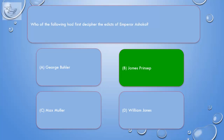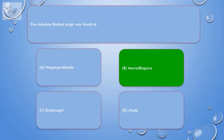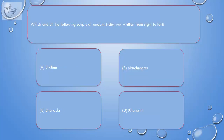Question: Priya Shokan Brahmi script was found at: A. Nagarjunakonda, B. Anuradhapura, C. Brahmagiri, D. Maski. Correct answer is B. Anuradhapura.